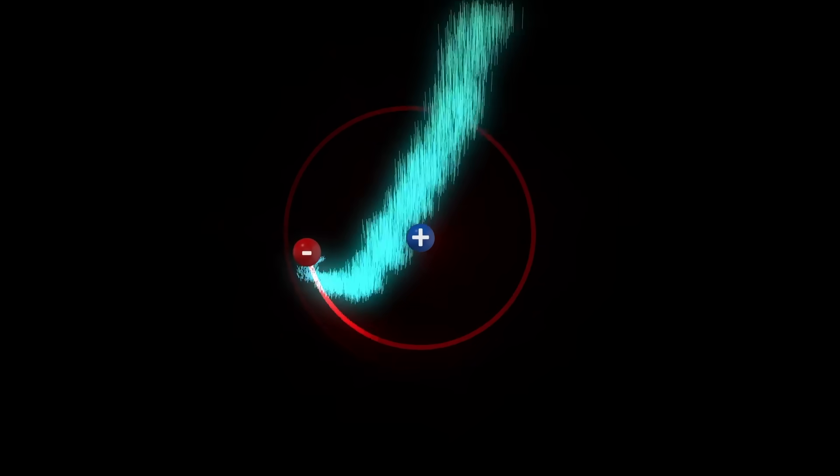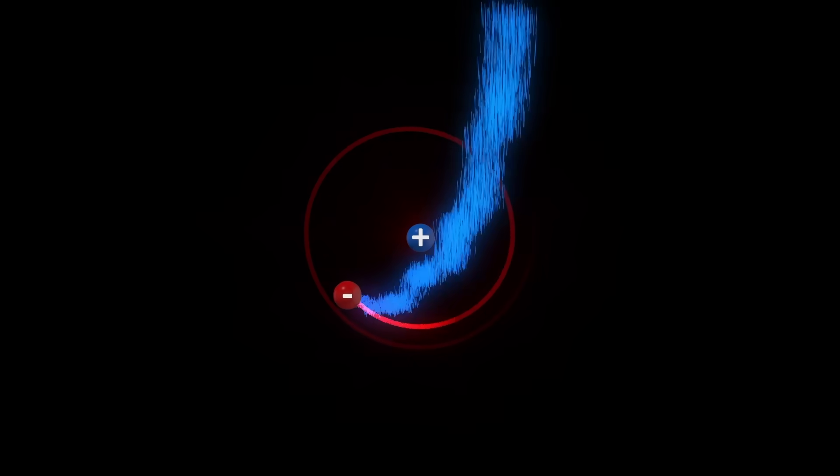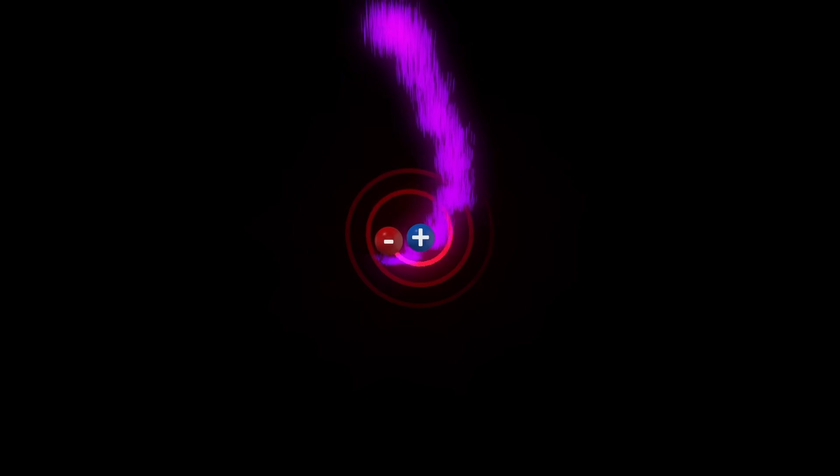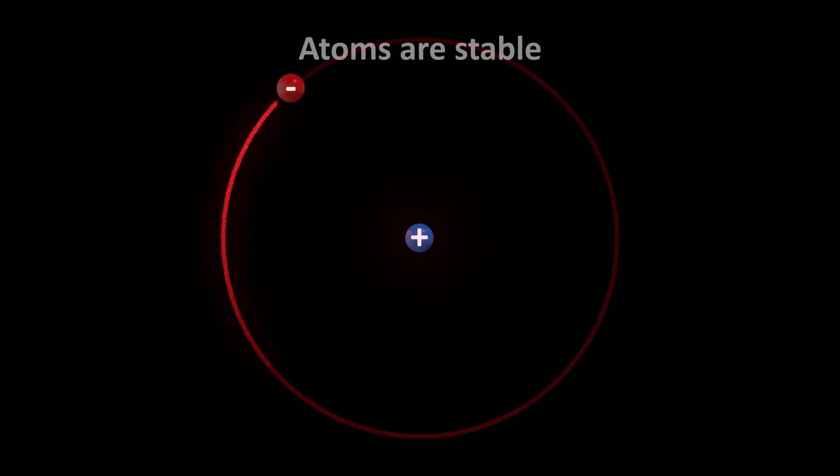This means the electron would constantly give up photons, losing energy in the process. It would thus spiral towards the nucleus and collide. But we know that no such thing actually happens in reality. Atoms are stable. An electron does not crash into the nucleus. Why? Because we were using the wrong tool to describe the model of an atom. Classical mechanics. We have to use a new tool.